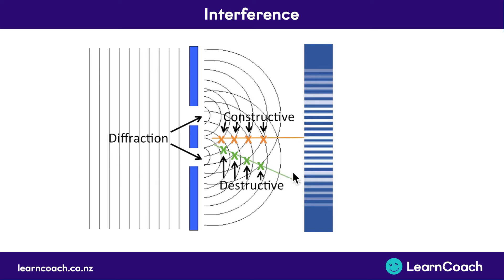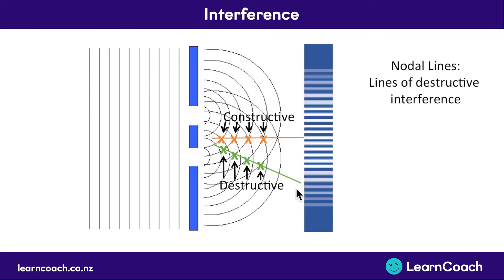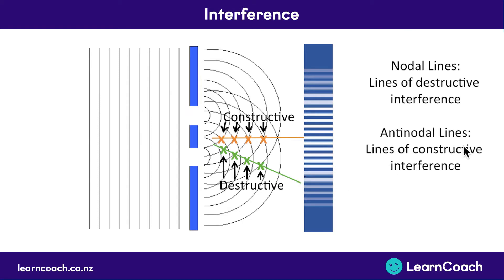We can look at both of these lines and give them names. The line of destructive interference, where they cancel out, is called a nodal line. In a counterintuitive way, antinodal lines — the opposite of nodal lines — are areas or lines of constructive interference. So you're going to have really big waves along the antinodal line of constructive interference, and absolutely no waves along the nodal line of destructive interference, because they're perfectly cancelling each other out.